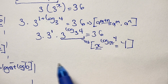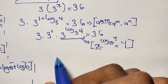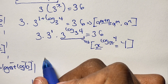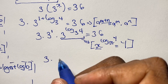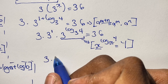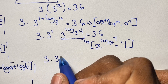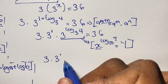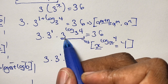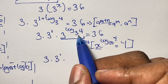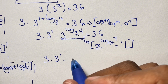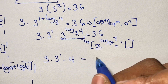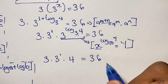So we'll use this rule to apply here. Using this rule with what we have, 3 times 3 to the power of 1 times 3 to the power of log base 3 of 4 — since the bases are the same — that equals 4. And again, this should evaluate to 36.